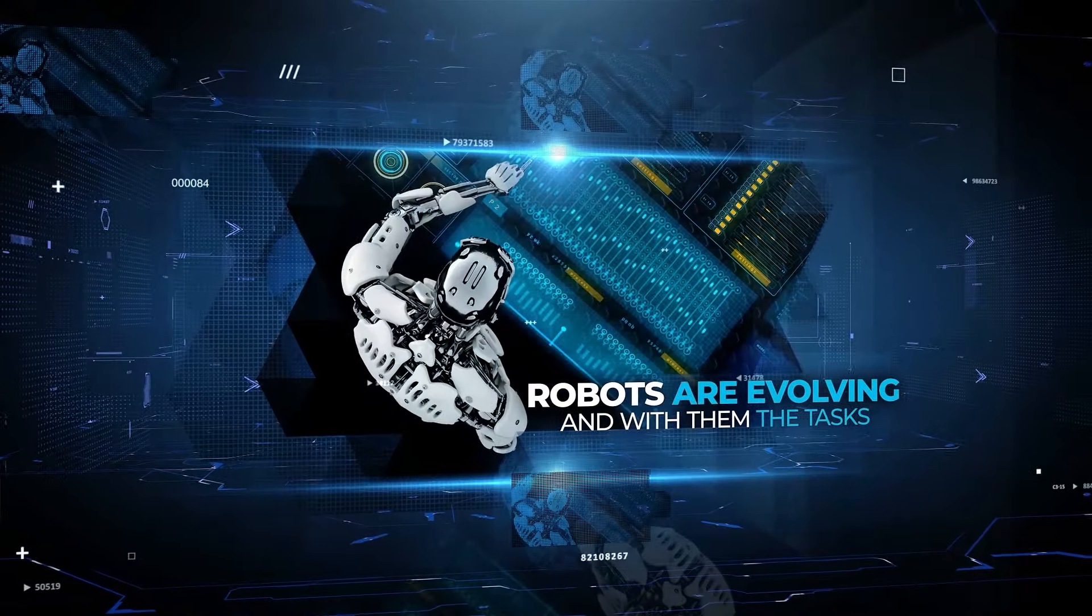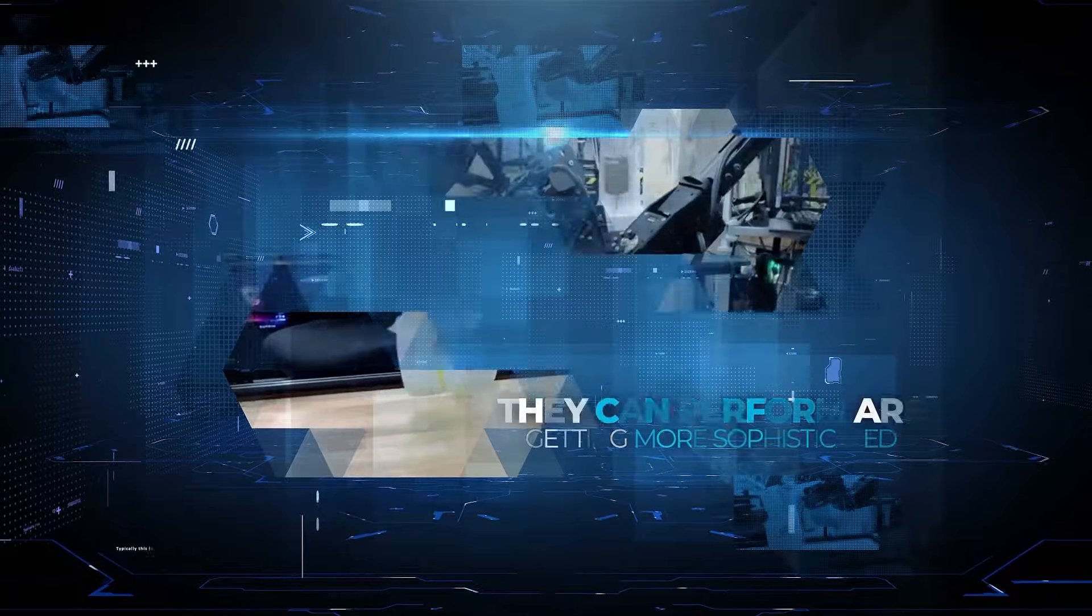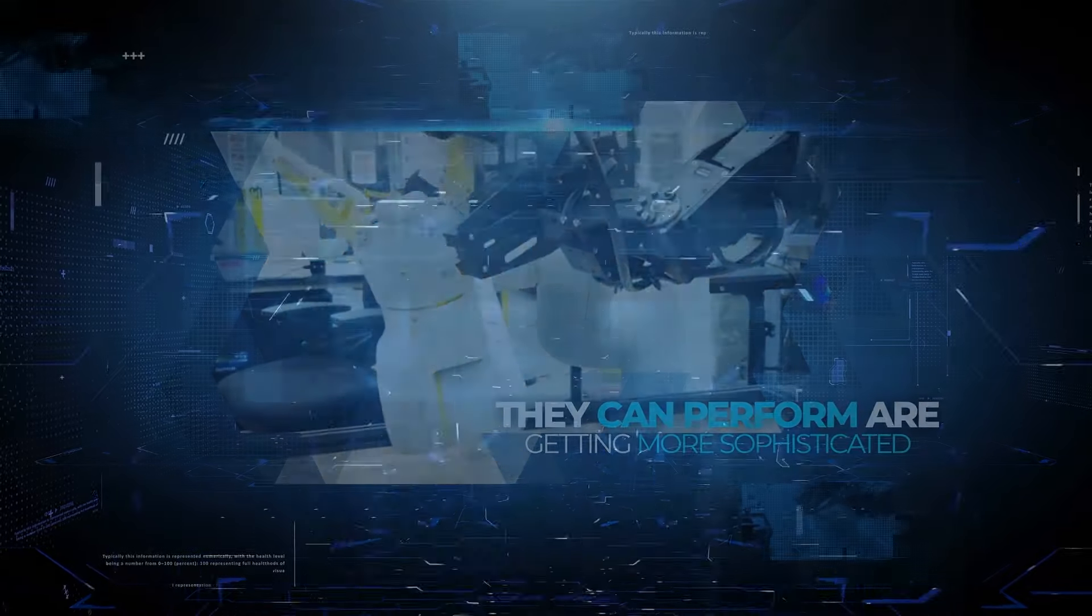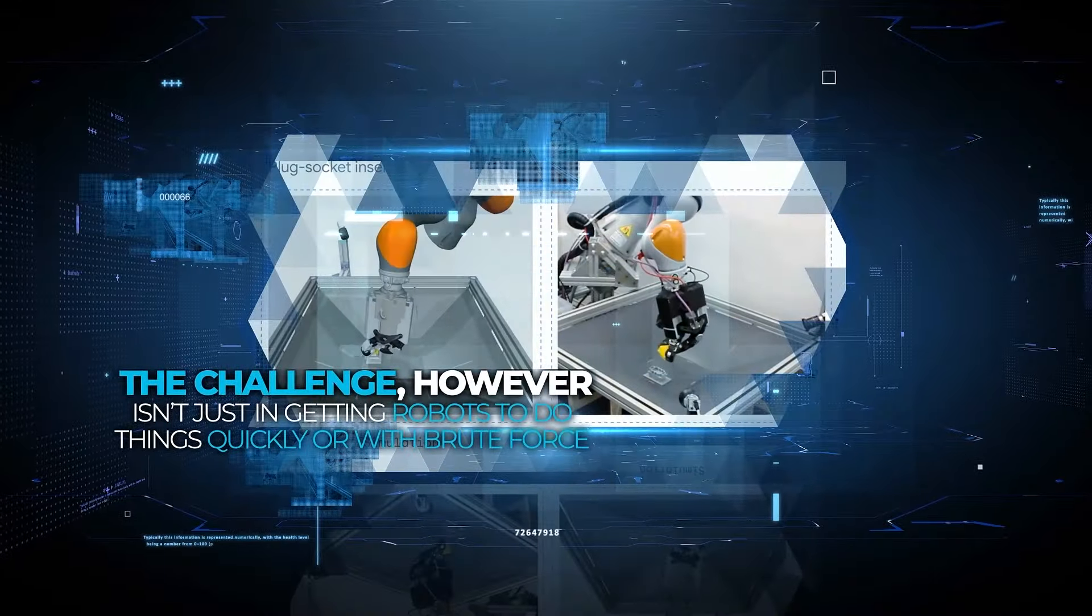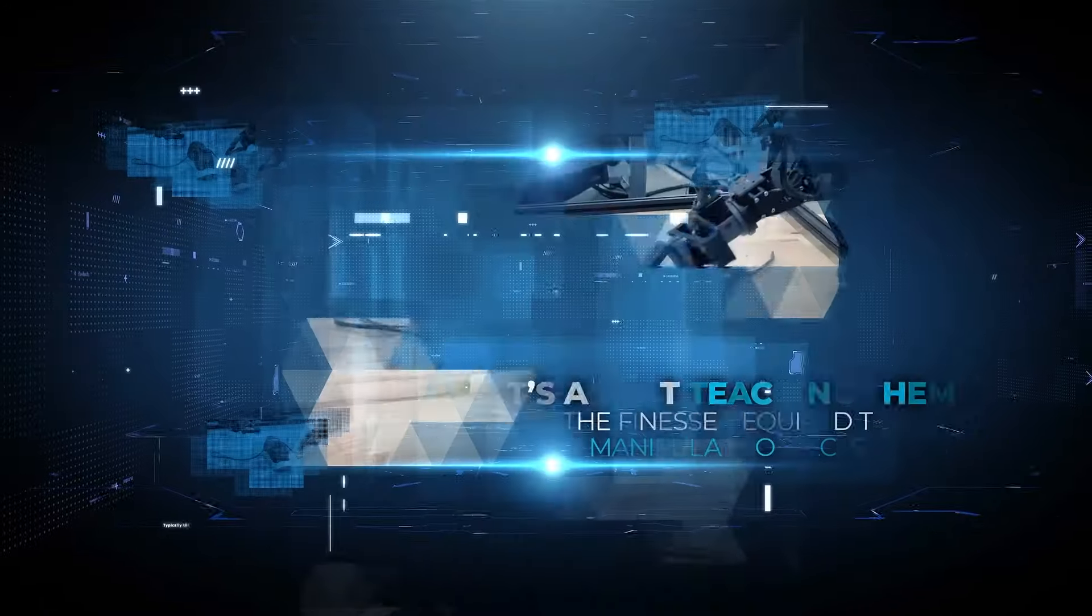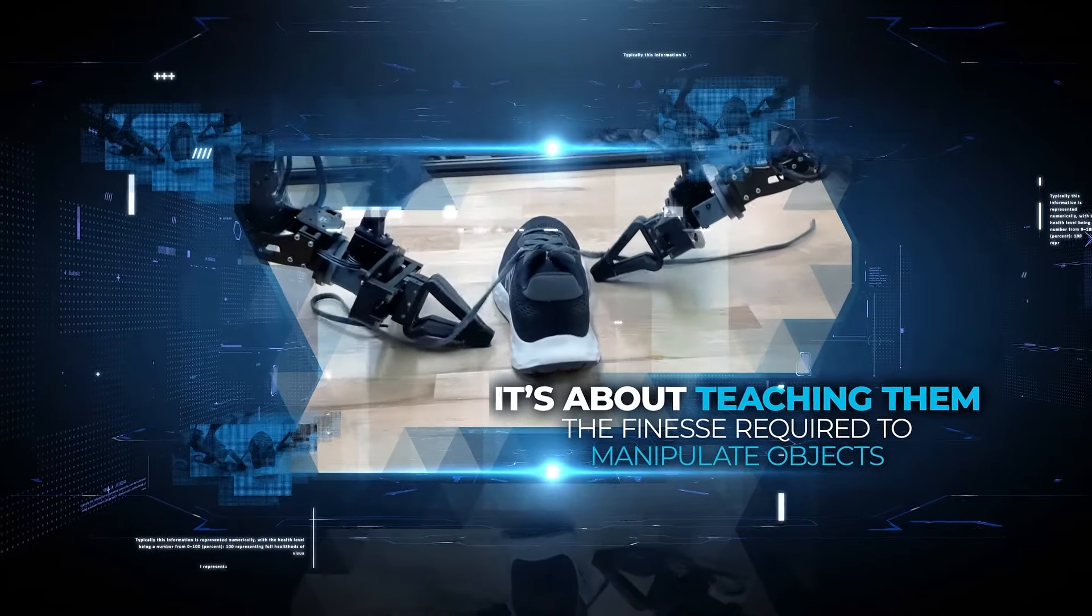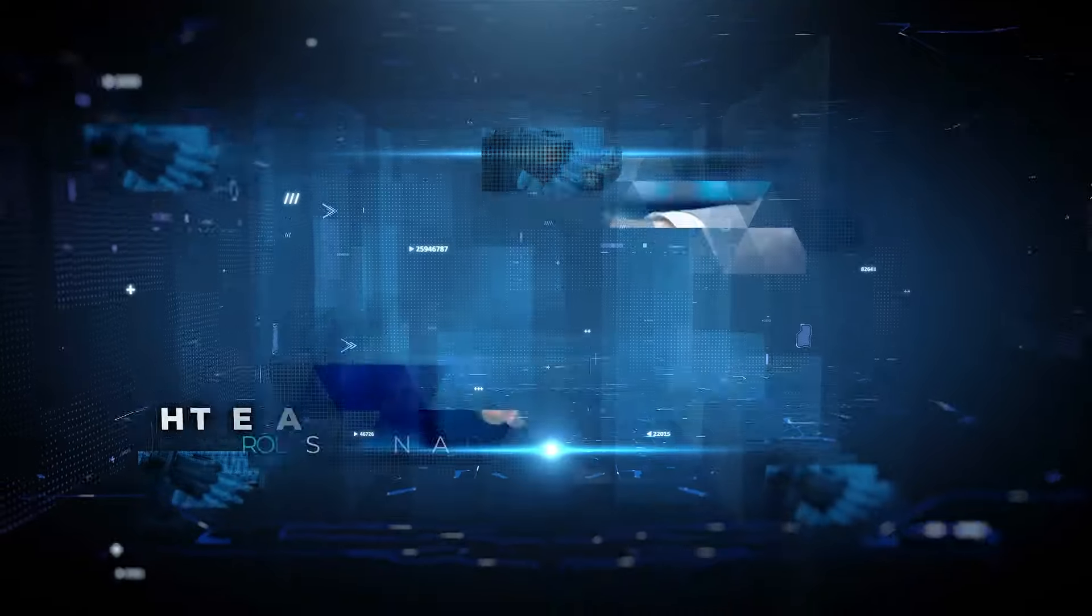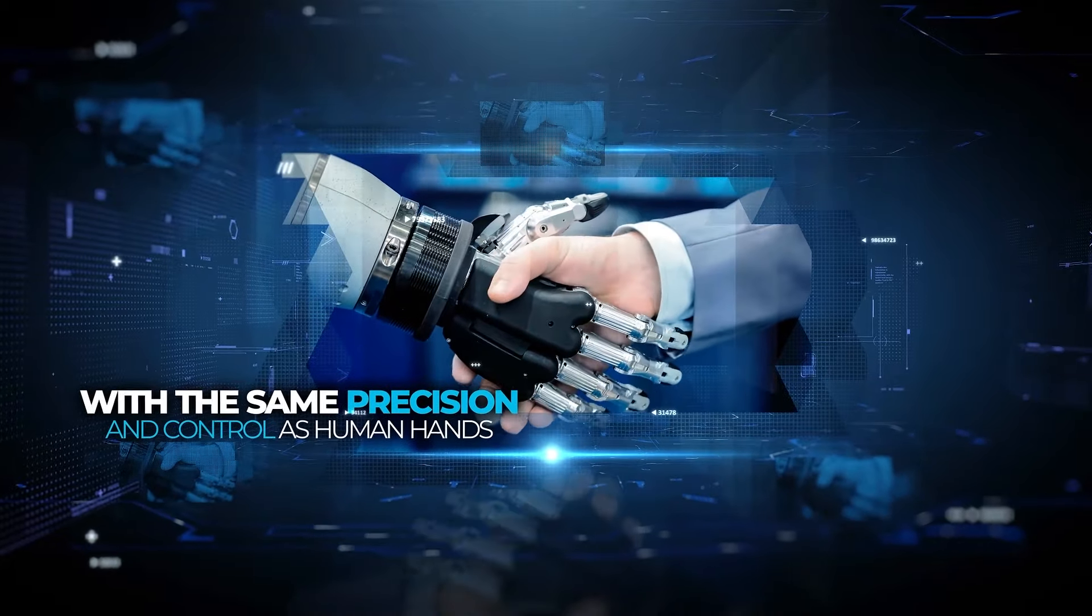Robots are evolving, and with them, the tasks they can perform are getting more sophisticated. The challenge, however, isn't just in getting robots to do things quickly or with brute force. It's about teaching them the finesse required to manipulate objects with the same precision and control as human hands.